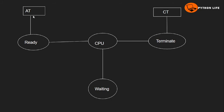Let's check the diagram. Arrival time is the starting time of a particular process. Next is turnaround time, which is the total time from arrival to completion. We check the turnaround time on the diagram. Next is waiting time — the amount of time a particular process waits in the ready queue for its CPU execution.